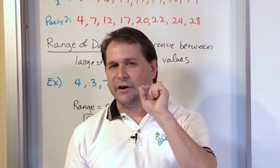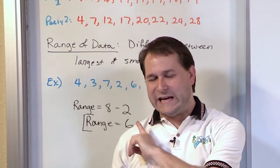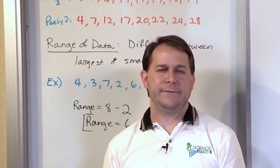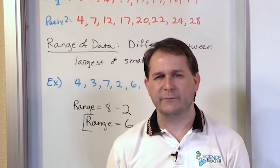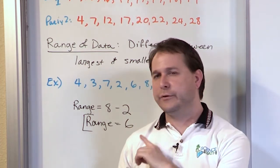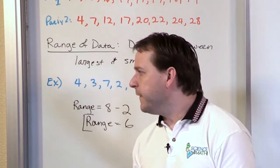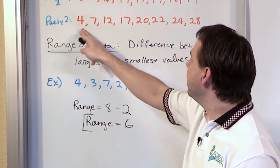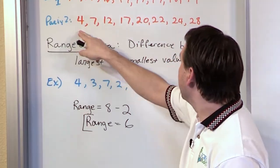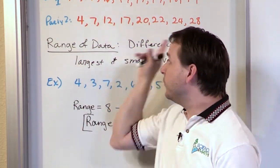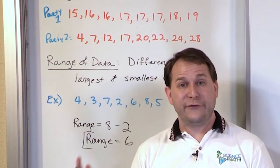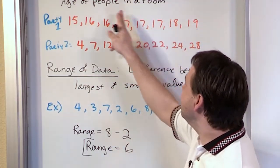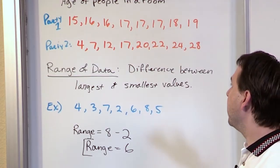But let me ask you, there should be a drawback to the range that we've calculated here that if you think hard enough, you will come to the same conclusion. There's a big drawback to using this. I mean, some people would say, well, this is great. If I calculate the range of this, the range of this data set here, 28 minus 4 is going to be 24, that's the range of this data set. The range of this data set would be 19 minus 15, which would give you 4.